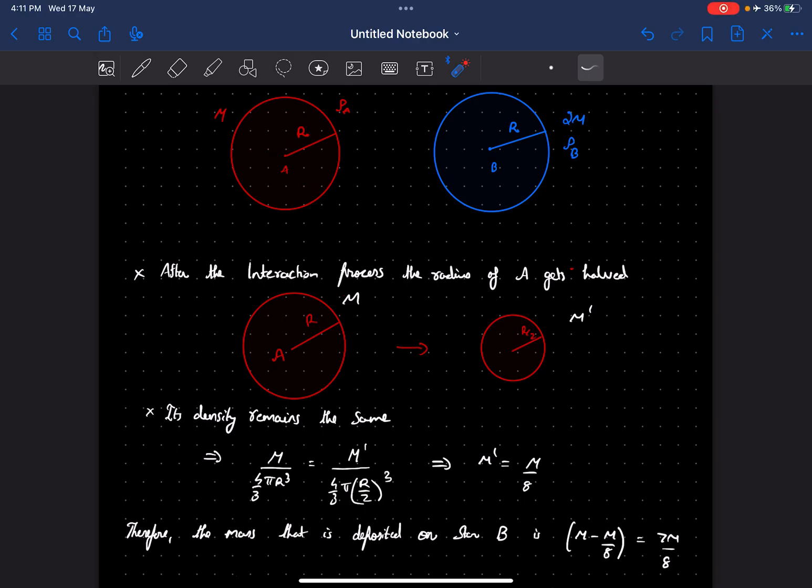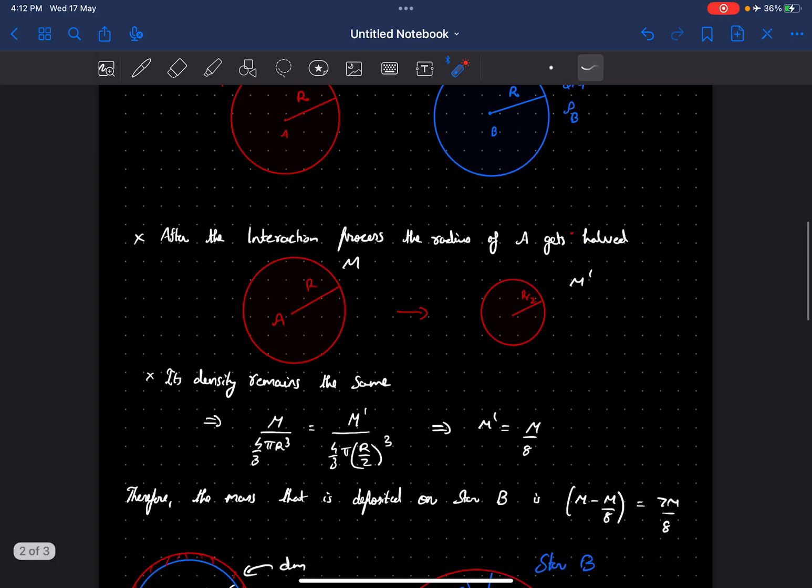Welcome to my channel. In this problem we are given two spherical stars A and B. They have the same radius. If we take the mass of star A as m, star B will have 2m mass, and their densities are given as rho A and rho B.